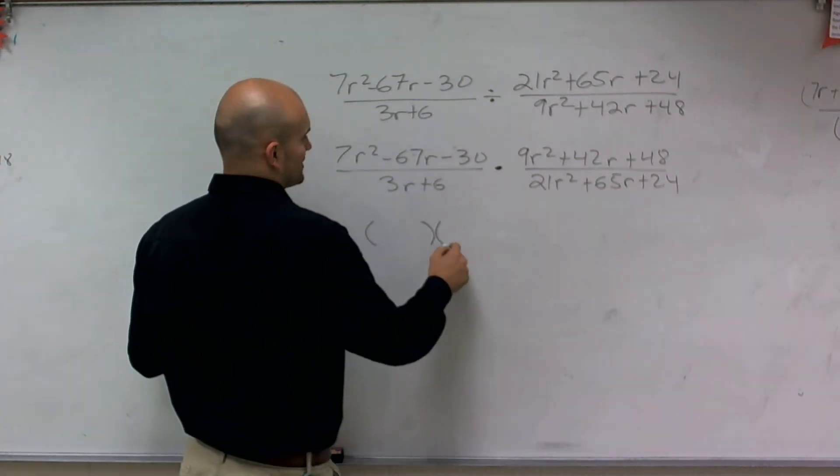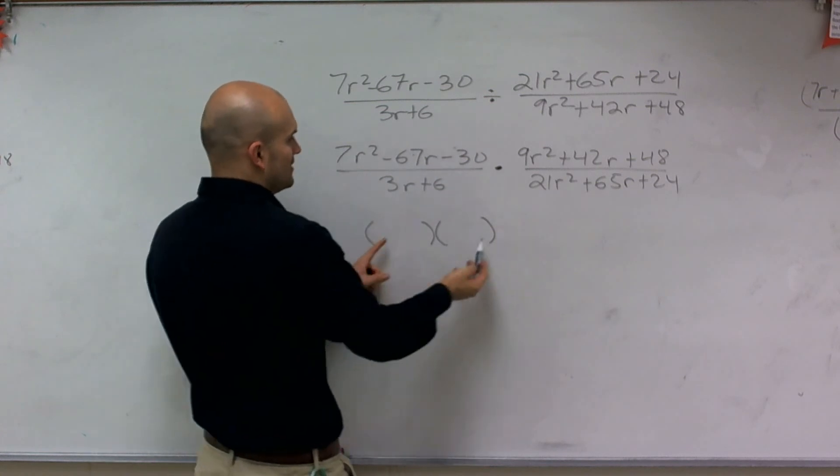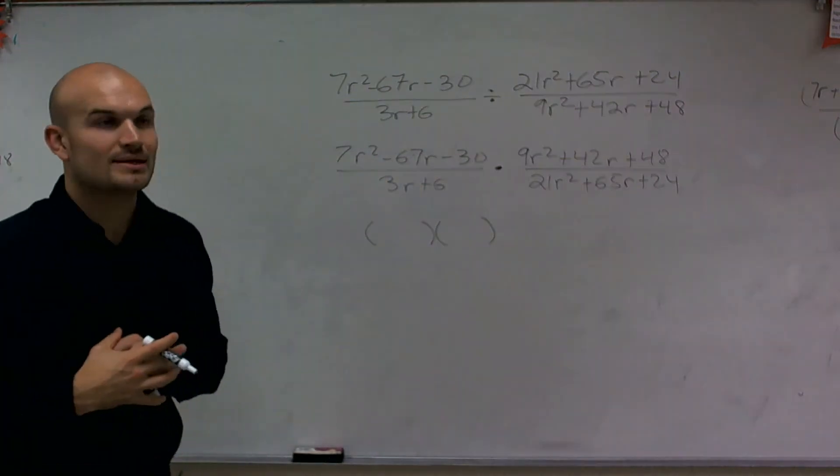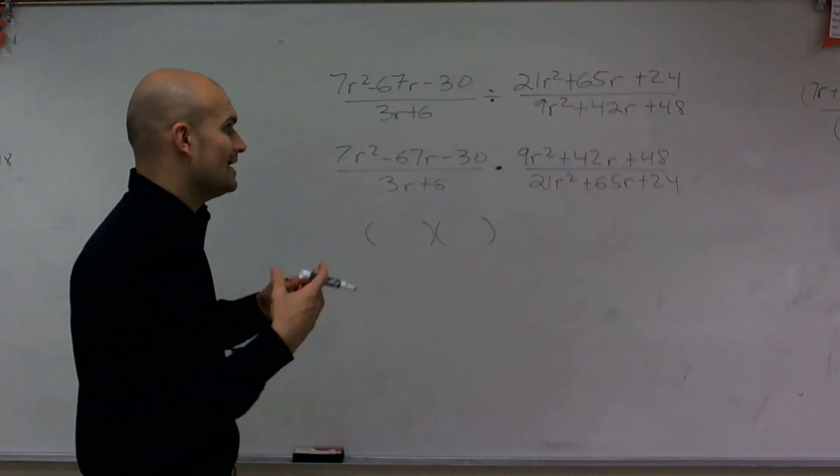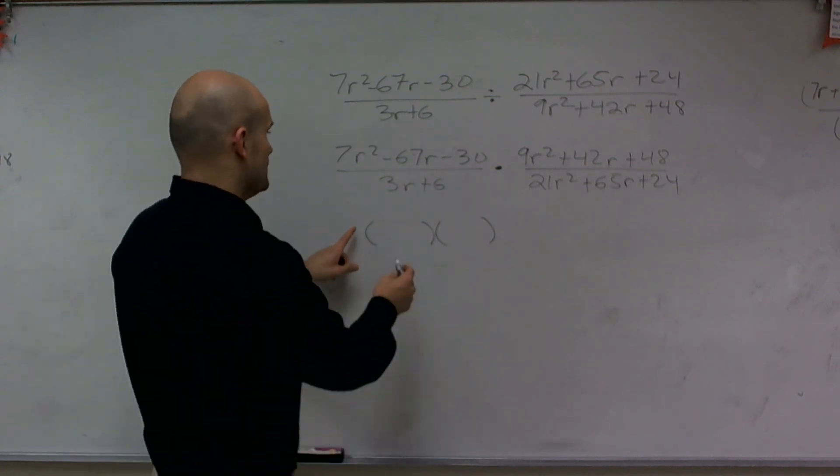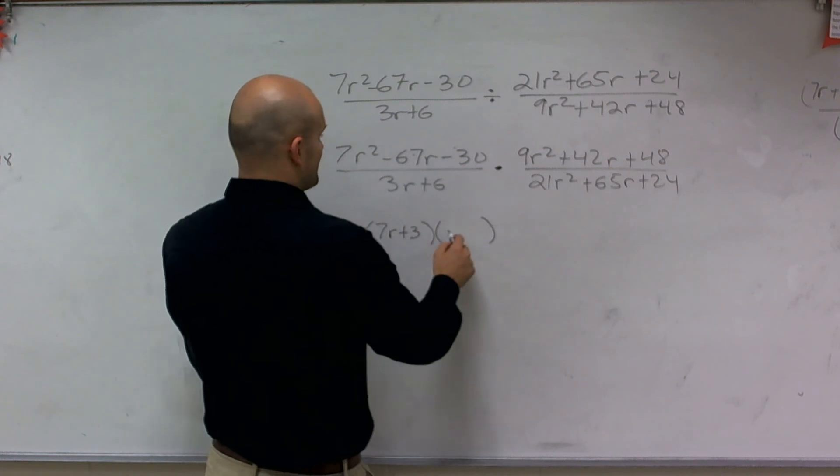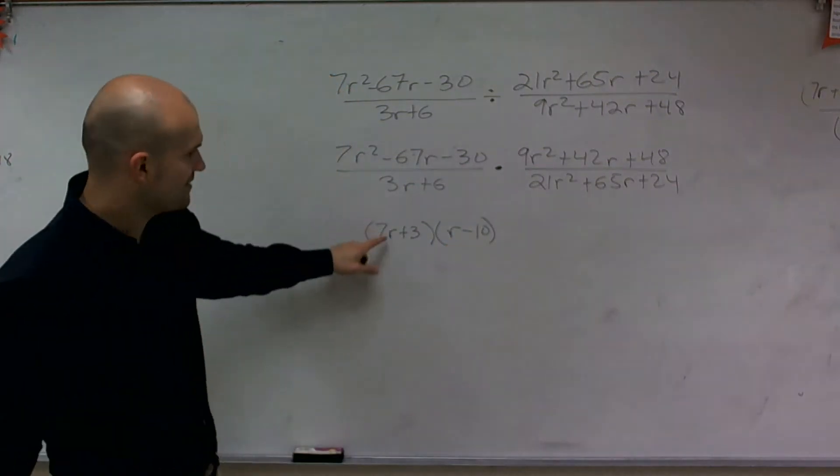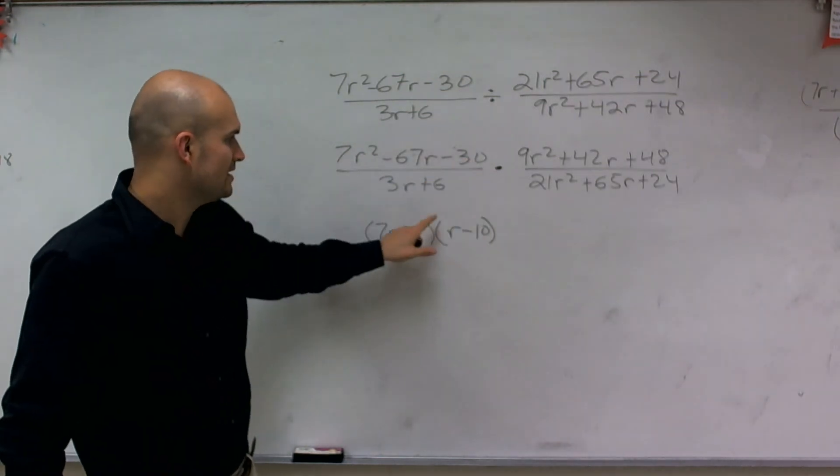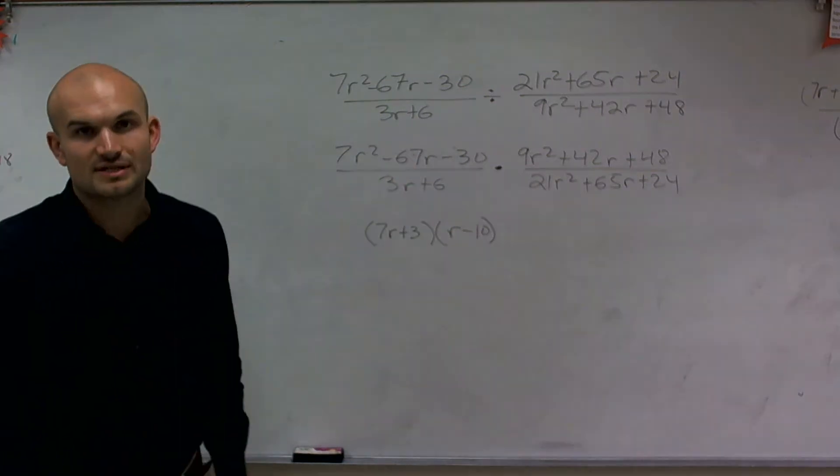As you go ahead and take a look at this, when you factor it, remember you want to figure out what two numbers are going to multiply to give you 7, but then also multiply to give you negative 30, where they add up to give you your middle term, negative 67r. And I kind of did my factoring before this because I don't want this video to run over too long. So what I determined when I factored this is I wrote this was 7r plus 3 and then r minus 10. Because 7r times r is 7r squared, 3 times negative 10 is negative 30, and then 3 times r and 7r minus 10 added together gives you negative 67r.